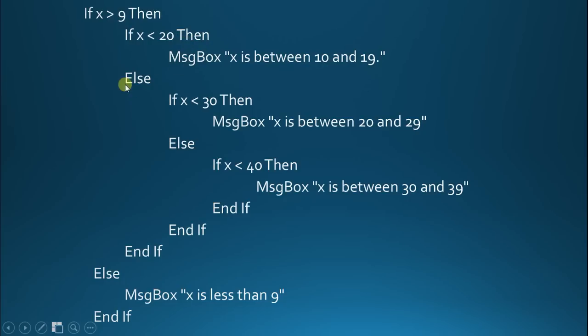If it's not less than 20, then we've got an else statement, which then also has an if statement inside of it, which is checking to see if x is less than 30. So, if x is greater than 9, but it's less than 20, then it's going to hit this message box x is between 10 and 19.